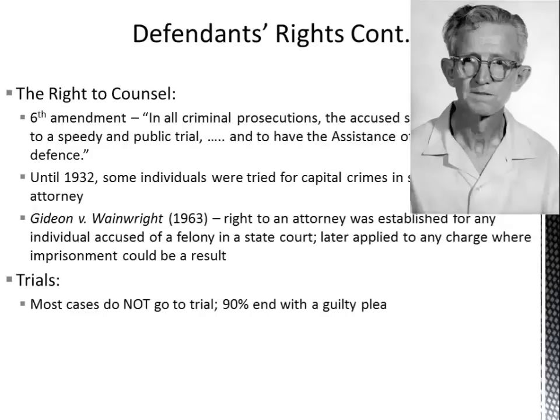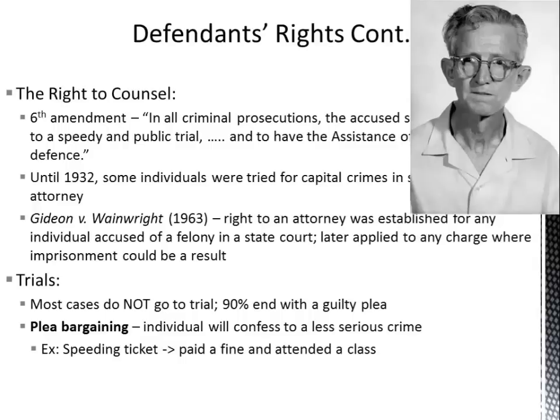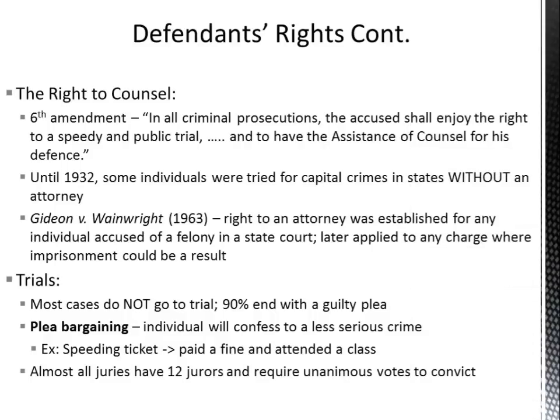When talking about trials, most cases do not go to trial — 90% end with a guilty plea through plea bargaining, in which you confess to a less serious crime. For example, when the speaker was 19, going 54 miles an hour in a 40 mph zone, they were offered the ability to plea to a lesser charge — an improper lane change — paying a $125 fine and attending a five-hour driving safety class, avoiding points on their license. Almost all juries in all states have 12 jurors and require unanimous votes to convict.